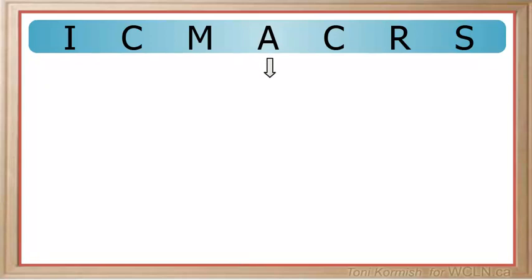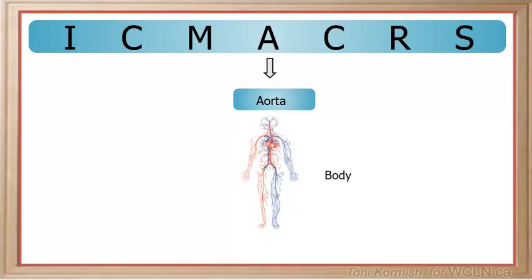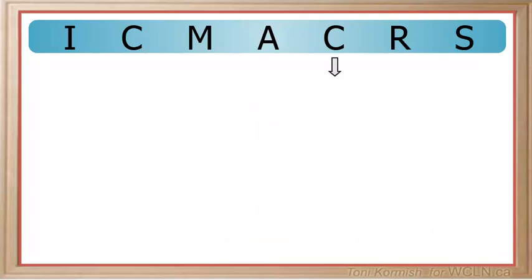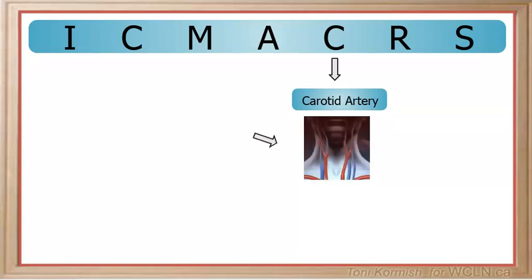A is for the aorta, the largest artery in the body that transports freshly oxygenated blood out of the left ventricle to all of the other arteries of the body. The corresponding vein is the vena cava, the largest vein in the body that collects spent blood from all of the other veins in the body and carries it to the right atrium.